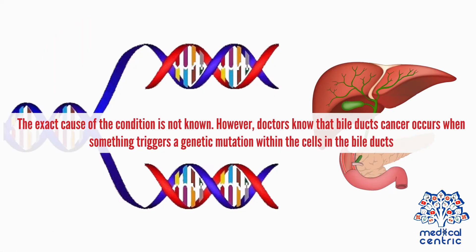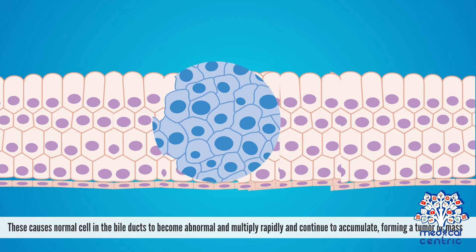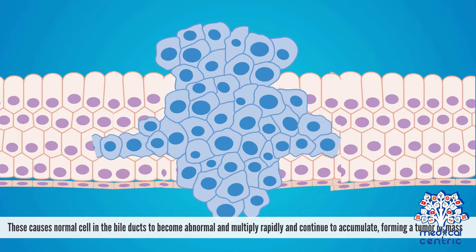The exact cause of the condition is not known. However, doctors know that bile duct cancer occurs when something triggers a genetic mutation within the cells in the bile ducts. This causes normal cells in the bile ducts to become abnormal, multiply rapidly, and continue to accumulate, forming a tumor or mass.